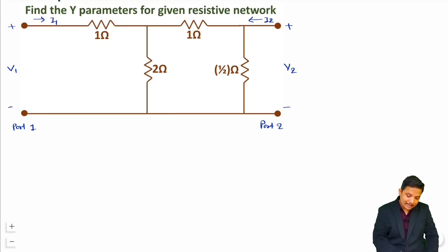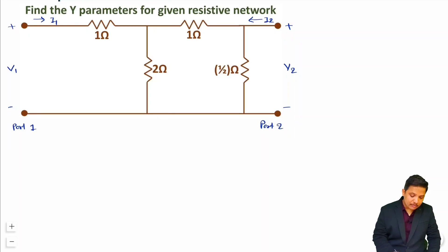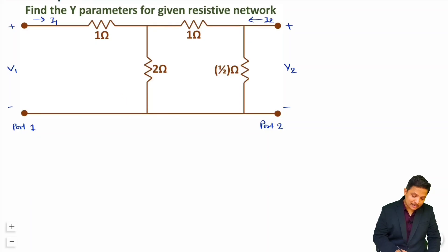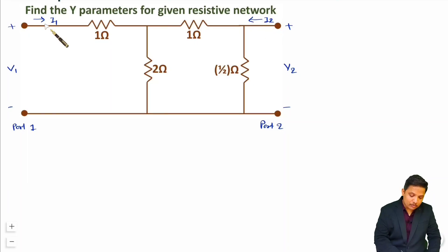This polarity is very essential and you must remember it before you solve Y parameters for any network. Sometimes students change the polarity of I1 and I2 — it should always be going inside the network.